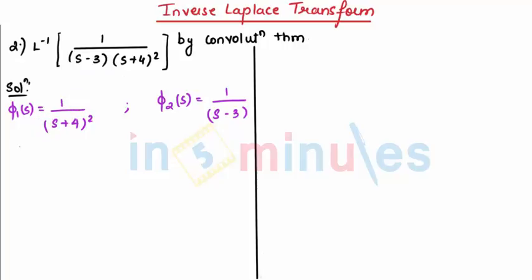So we can say L inverse of phi 1 of s is f 1 of t which will be nothing but e raised to minus 4t shifting effect and 1 upon s square will be t, and f 2 of t will be e raised to 3t.